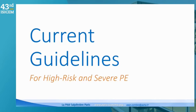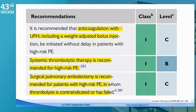Going back to the guidelines for high-risk severe PE, there are three Class 1 recommendations — meaning you need to do it. Anticoagulation with unfractionated heparin using a weight-adjusted bolus is indicated. Systemic thrombolytic therapy is also a Class 1 recommendation, with level of evidence B. There is still a Class 1 recommendation for surgical embolectomy for patients with high-risk PE in whom thrombolysis is contraindicated or has failed — though this is not the strategy used now in my center for most patients with this indication.